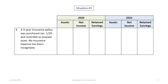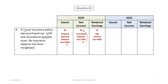Third situation: a three-year insurance policy purchased in January 2020 was recorded as a prepaid asset, but no insurance expense has been recognized. Recording it as prepaid is correct, but the balance must be reduced as insurance is consumed. At end of 2020, assets are overstated because the prepaid insurance balance is too high. Net income is overstated because insurance expense is understated, and retained earnings are overstated.